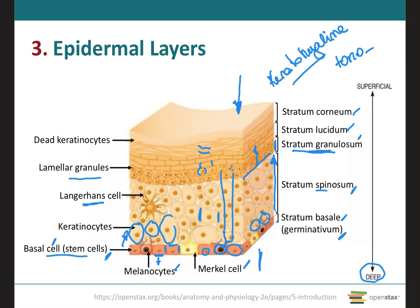Next we have the stratum lucidum, which means clear, and this layer is only present in thick skin, representing the areas of the palms of your hands, the fingertips, and the soles of your feet. It is made up of four to six cell layers of flat, clear, dead keratinocytes. They will contain a large amount of keratin and the plasma membrane will appear slightly thickened. The keratin is more regularly arranged parallel to the skin surface, which probably provides an additional level of toughness in this region.